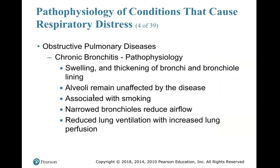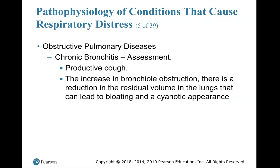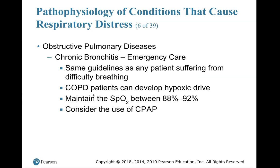Chronic bronchitis pathophysiology: swelling and thickening of the bronchi and bronchial lining. Alveoli remain unaffected — the disease is associated with smoking. Narrow bronchioles reduce airflow and reduce lung ventilation with increased lung perfusion. Chronic bronchitis assessment: you'll hear a productive cough. There is an increase in bronchial obstruction and a reduction in the residual volume in the lungs, which can lead to bloating and a cyanotic appearance. Emergency care for chronic bronchitis follows the same guidelines as any patient suffering from difficulty breathing. COPD patients can develop hypoxic drive — maintain SpO2 between 88 and 92%, and consider using CPAP.